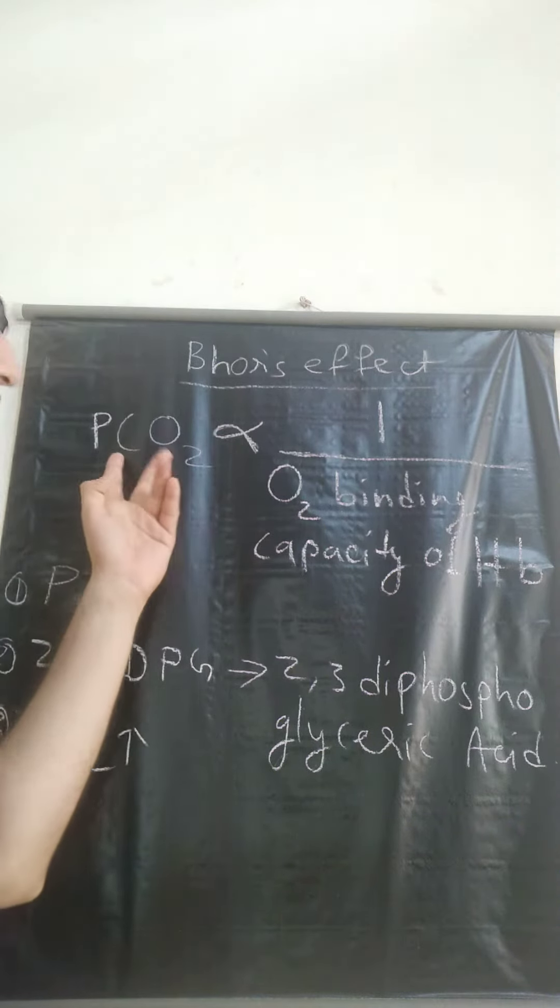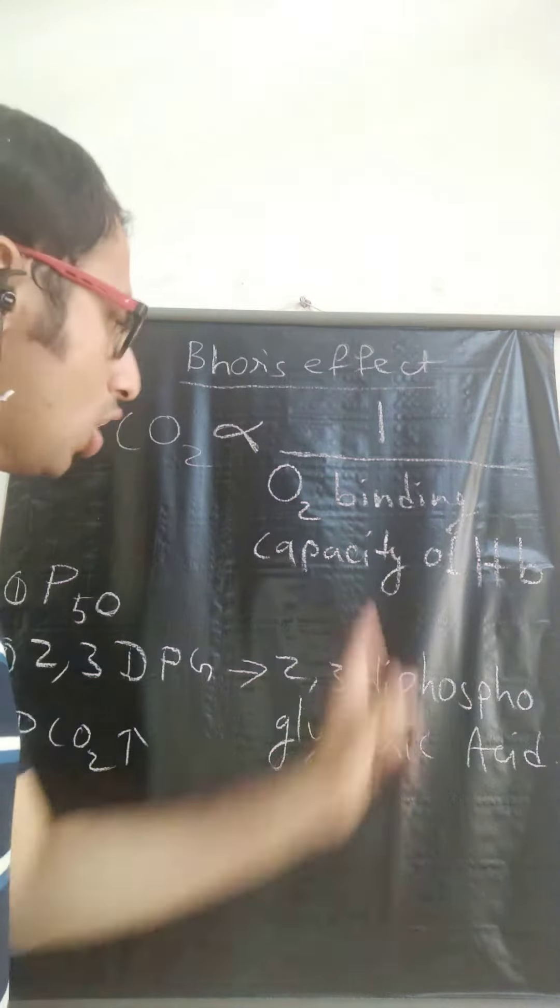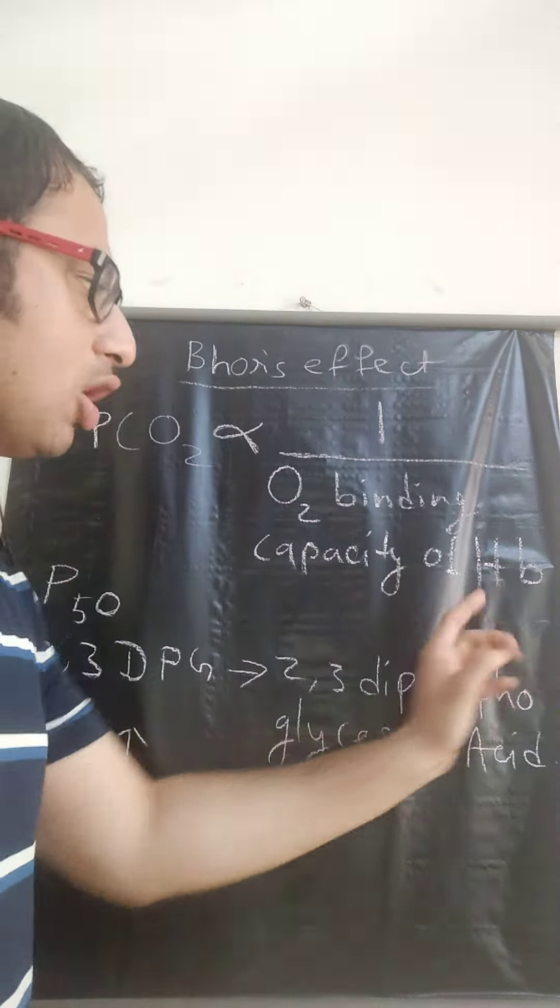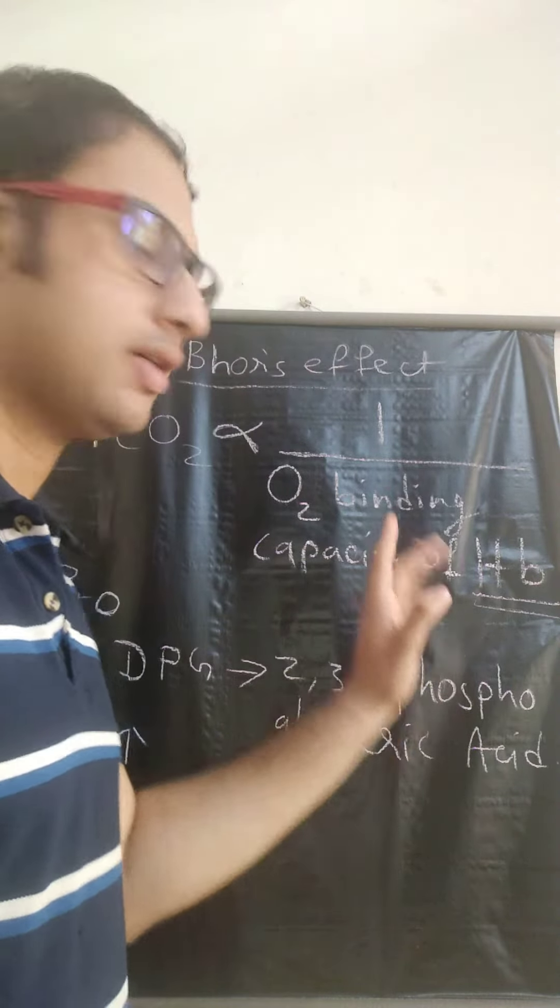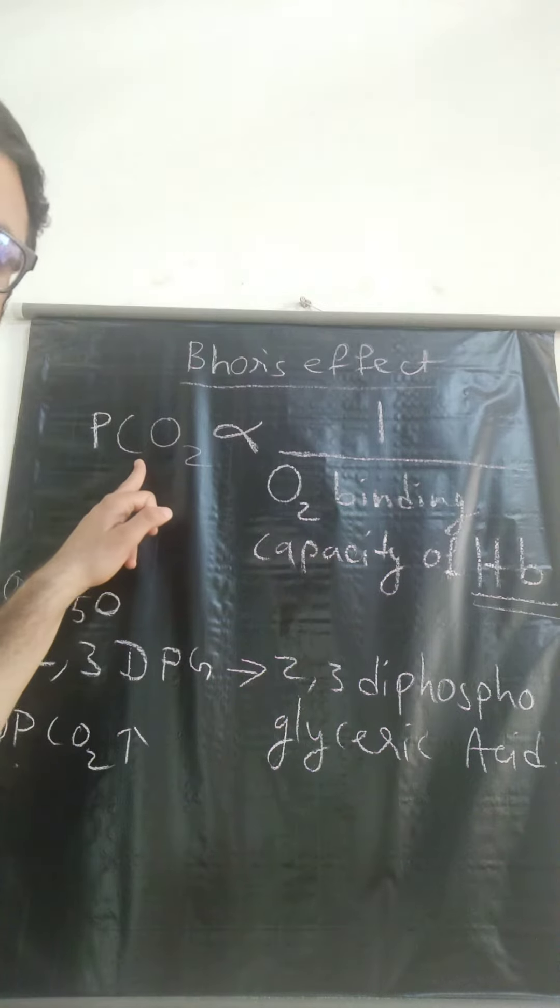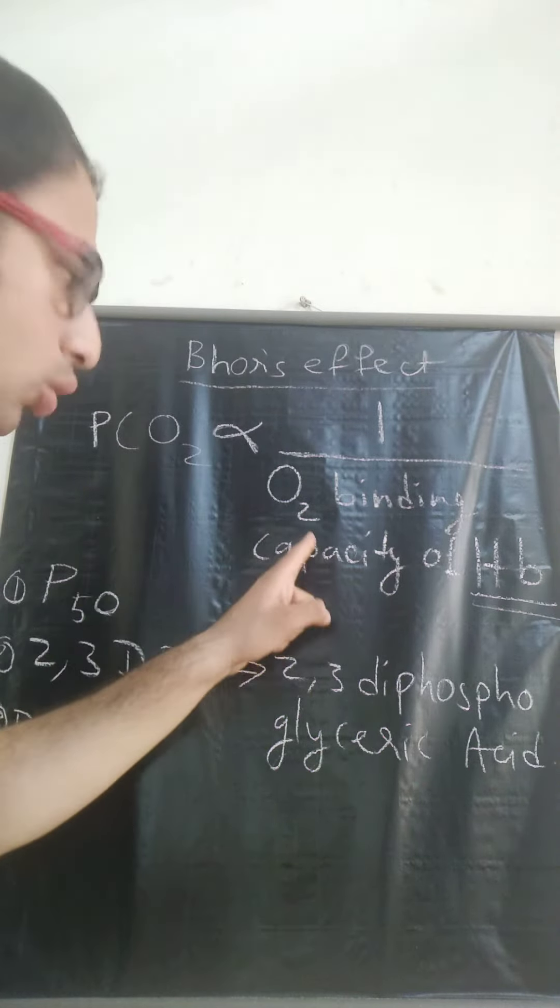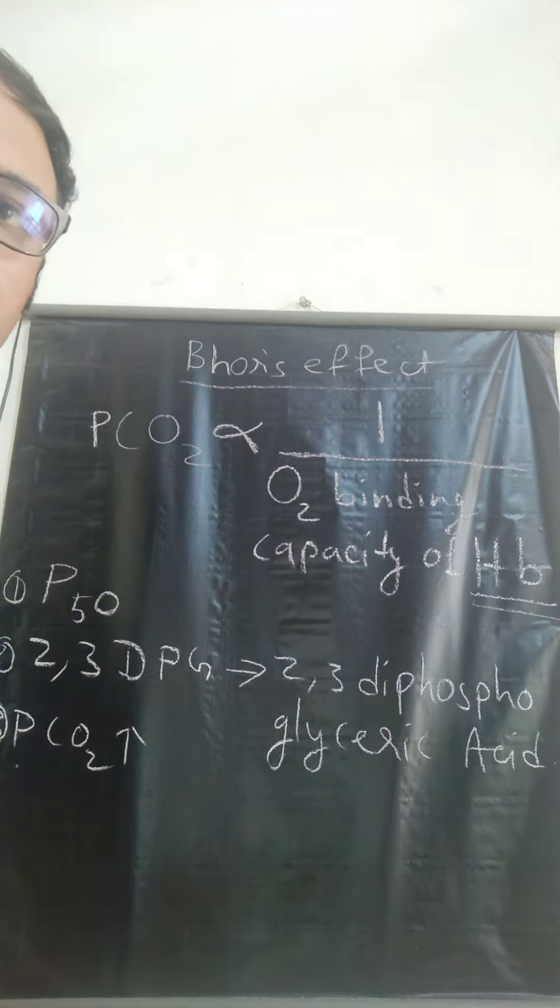When partial pressure of carbon dioxide is inversely proportional to oxygen binding capacity of hemoglobin. Here what is written? Partial pressure of CO2 is inversely proportional to oxygen binding capacity of hemoglobin. This is the Bohr's effect.